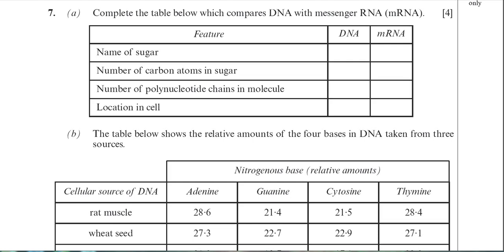We're now looking at question 7 from the January 2011 BY-1 paper. This question is on both DNA and cell division — both mitosis and meiosis. It starts off looking at DNA and RNA, where you have to fill in a small table. This table is a little bit odd because the space given to write in your responses is not particularly big enough. Some students got confused by this table because it didn't look like you had to write anything in the boxes, but you actually do.